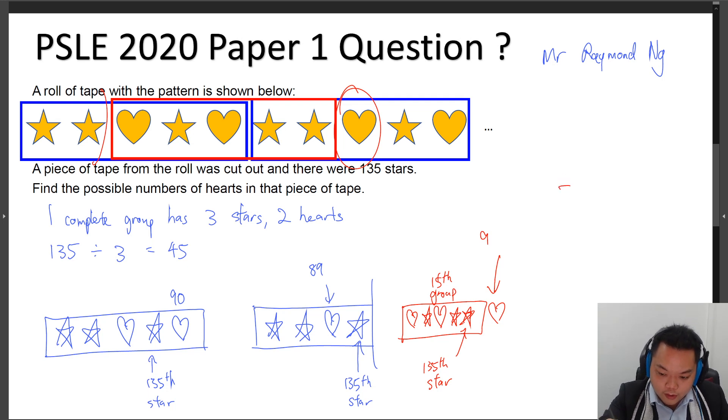Okay, so there are actually three possible answers for this: 89, 90, and 91.